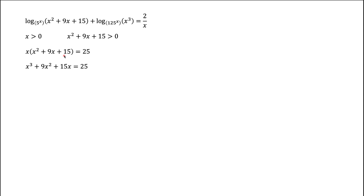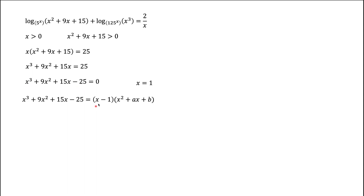We open the parentheses and bring 25 to the left-hand side. Looking at this equation, we can quickly guess that one solution is x = 1. If x = 1 is a root, then the polynomial on the left can be written as two factors: (x − 1) times a quadratic polynomial. In this quadratic polynomial, we don't know a or b, which we need to find. One way is to divide the cubic polynomial by (x − 1); another way is to expand the parentheses.